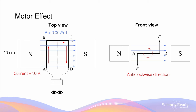The force acting on side CD is out of the page, and in this position, side BC has no force acting on it. Imagine looking from the front of this wire setup — you will see a single plane of the coil. This is side A on the left and side D on the right.